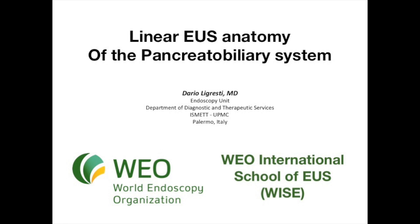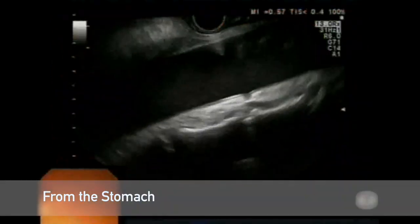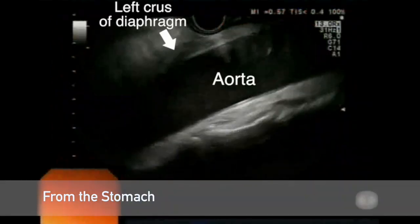This is a video about the EUS anatomy of the pancreatobiliary system with a linear scope. Starting the examination from the gastroesophageal junction, we can image the aorta with the left crus of the diaphragm above.